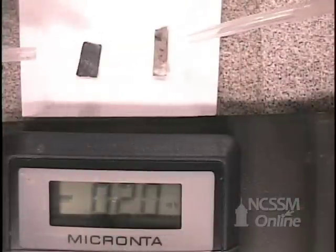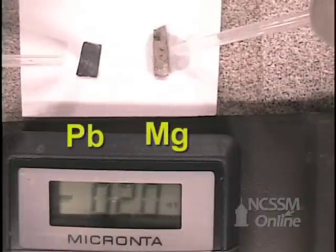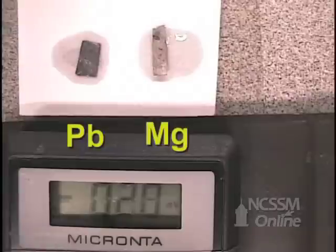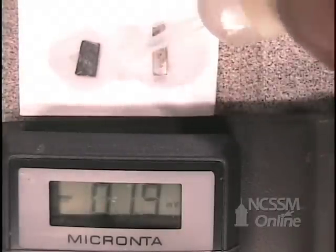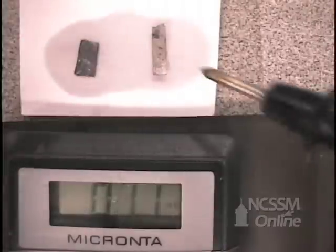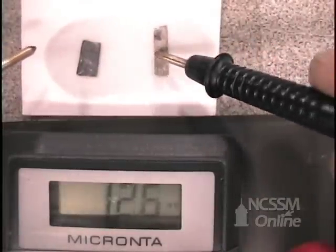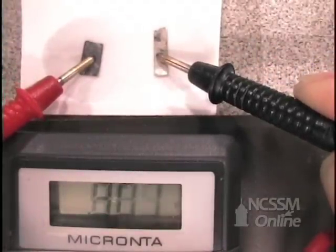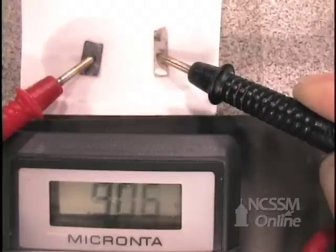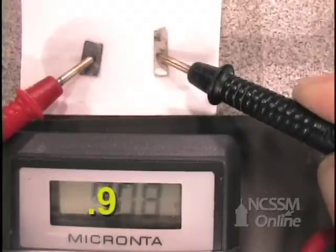Now let's look at magnesium and lead with our salt bridge of potassium nitrate. Black lead on the magnesium, red lead on the lead. And we have about 0.9 volts.